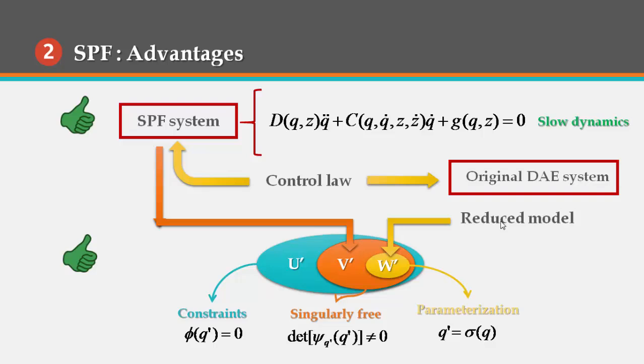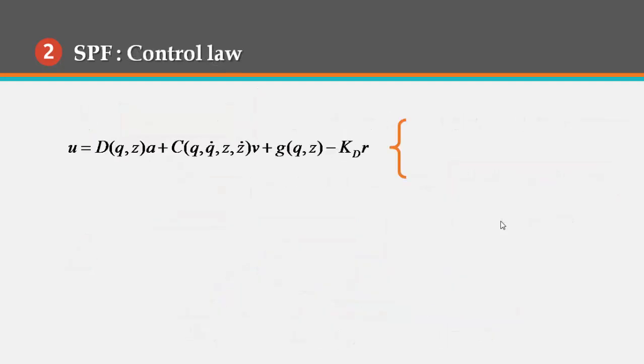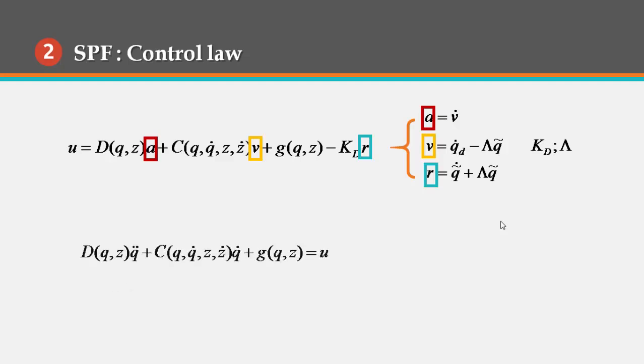For trajectory tracking, we consider the non-adaptive version of the control law of Slotine and Li, where those quantities are expressed as follows. The resulted closed loop system is given by the set of the three equations.